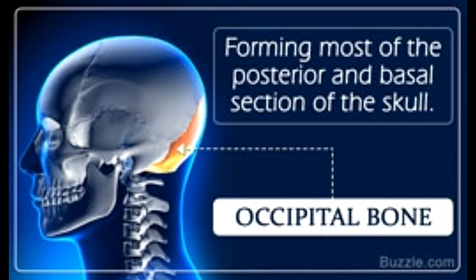The term cranium refers to the part of the skull that encloses the brain. Out of the 22 bones that form the human skull, 8 bones form the cranium. The cranial bones include the occipital bone, parietal bones, frontal bone, temporal bone, sphenoid bone, and the ethmoid bone. These bones perform the vital function of protecting the brain from damage in the event of trauma.